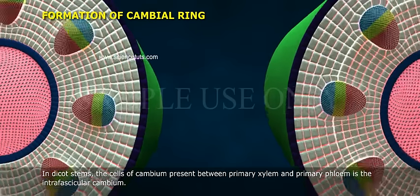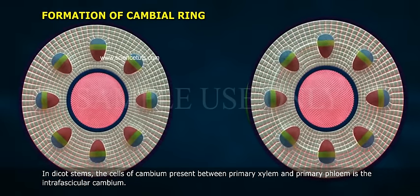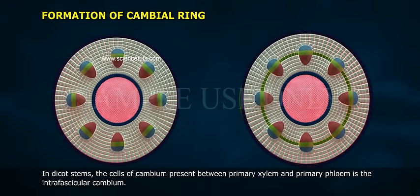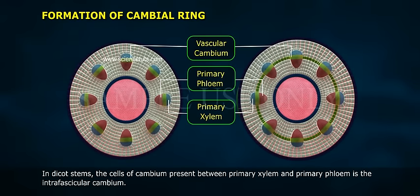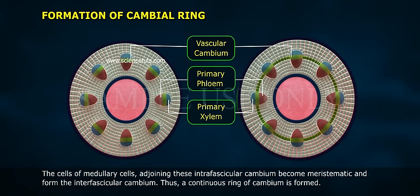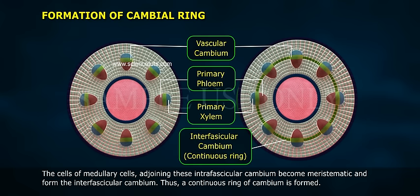Formation of cambium ring. In dicot stems, the cells of cambium present between primary xylem and primary phloem form the intrafascicular cambium. The medullary cells adjoining these intrafascicular cambium become meristematic and form the interfascicular cambium. Thus, a continuous ring of cambium is formed.